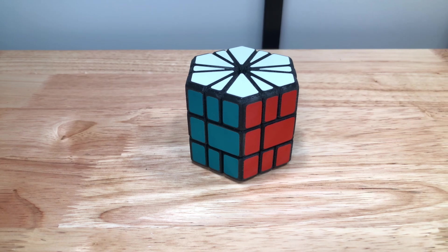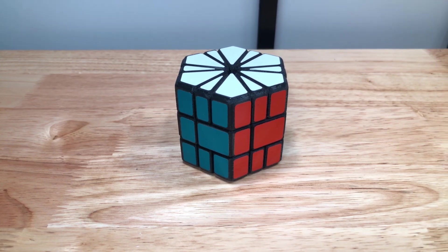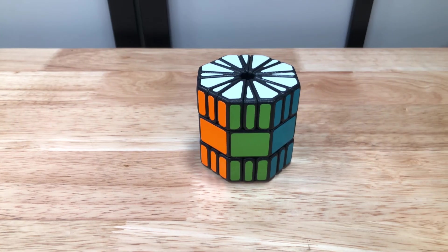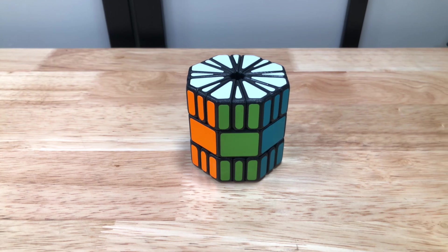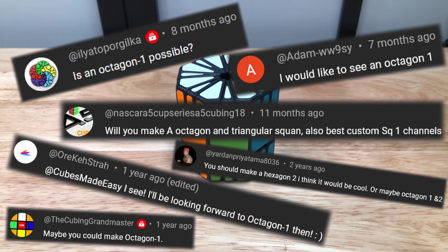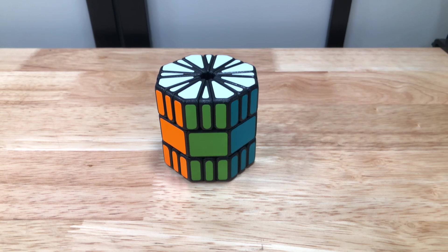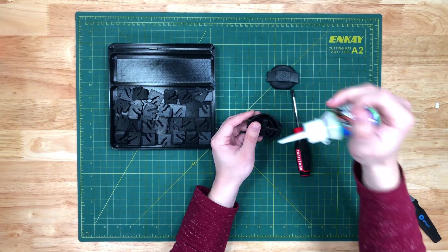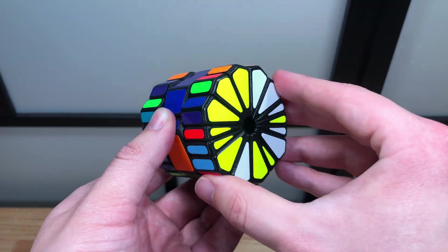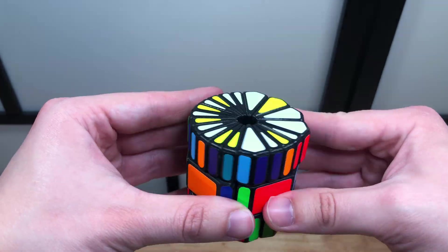Since then, the logical next step has always been to take the concept a step further and create the Octagon-1, which was supported by all your comments. So today, that's exactly what I'm going to do. I'm going to design the Octagon-1, 3D print it, put it together, and then explore how it turns and see what it looks like when scrambled.